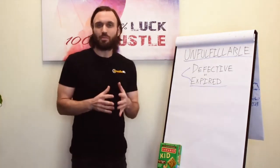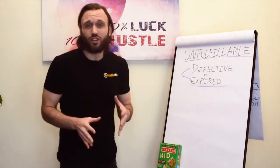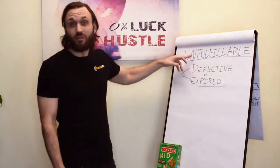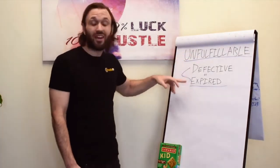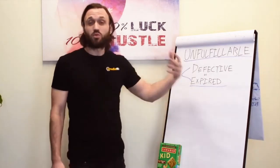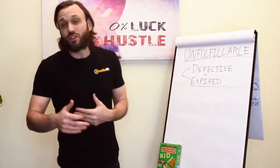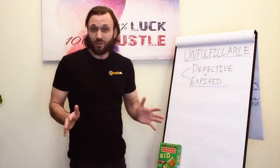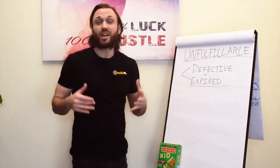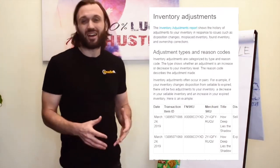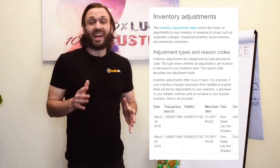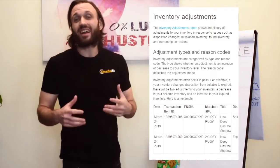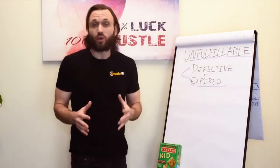There's a lot of opportunity people are missing out on. I'm going to explain the exact process we use at Amazon Lit to manage unfulfillable inventory — understanding what's defective, expired, customer-damaged, warehouse-damaged, or distributor-damaged. You need to dive deep into that Inventory Adjustments Report. If you haven't spent time in it, learn it — especially if you're trying to grow a viable Amazon business. The information in there will blow your mind.